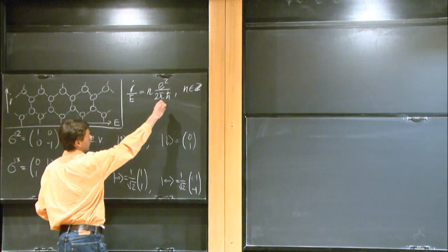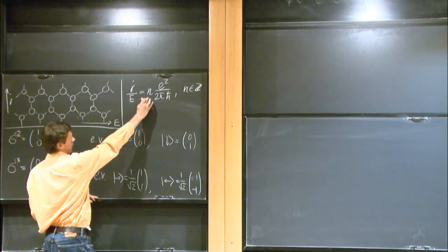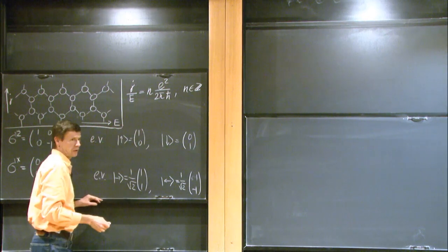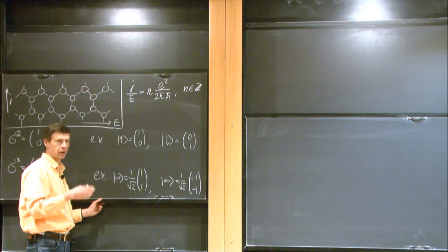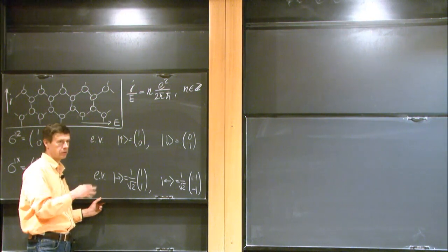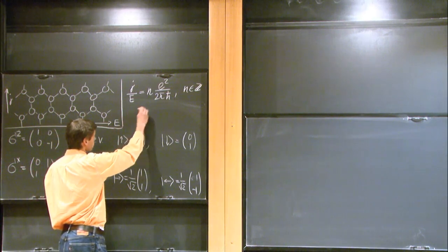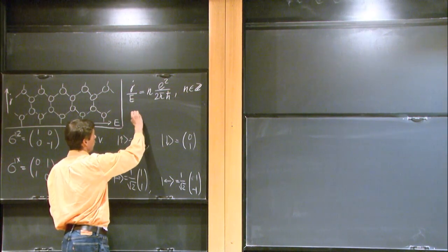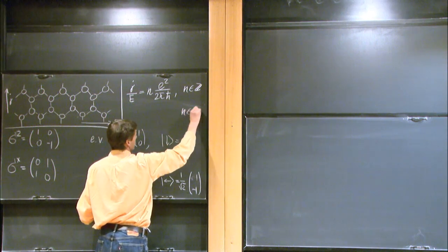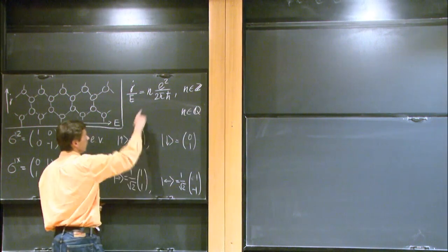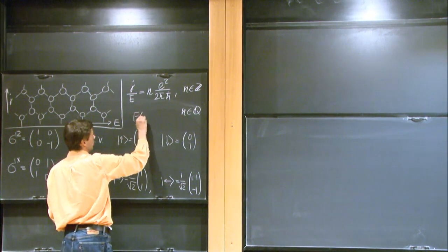And that is called an integer quantum Hall effect. N is an integer, and of course, in physics, nothing is precise, but this formula is actually very good. It's good to very high precision, and as the temperature goes low, the precision becomes better. And in some cases, one can find rational numbers, and this is called fractional quantum Hall effect.